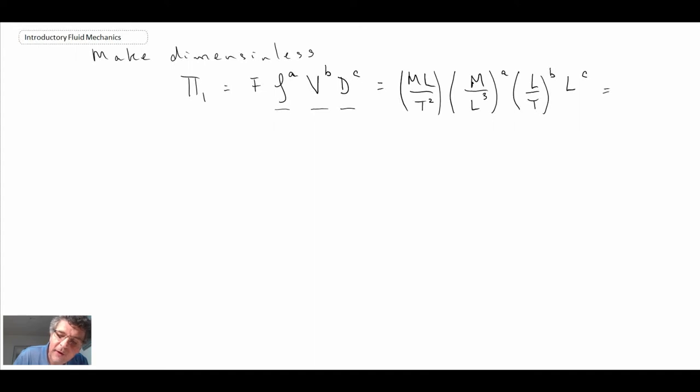This is then going to result in, pulling in the dimensions for each of the terms we have in this group, raised to powers A, B, and C. We want to equate this to mass, we want to have zero dimensions. Length, we want to have zero dimensions. And time, we want to have zero dimensions. So we're going to get three equations, three unknowns, and this is the fun part of Buckingham Pi analysis, solving these equations.